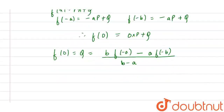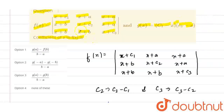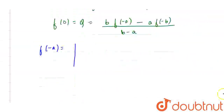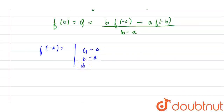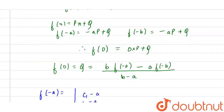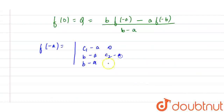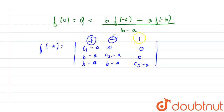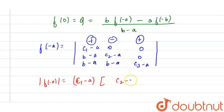Now to solve this, we first calculate f(−a) by substituting x = −a into the determinant. We get entries c1−a, b−a, b−a in the first row; c1−a, b−a, b−a in the second; and 0, c2−a, b−a in the remaining positions, with c3−a and zeros elsewhere. Since the positive-negative-positive expansion has two zero terms, we only consider c1−a, and the determinant reduces to c1−a times (c2−a)(c3−a) − (b−a)·0, which is zero.